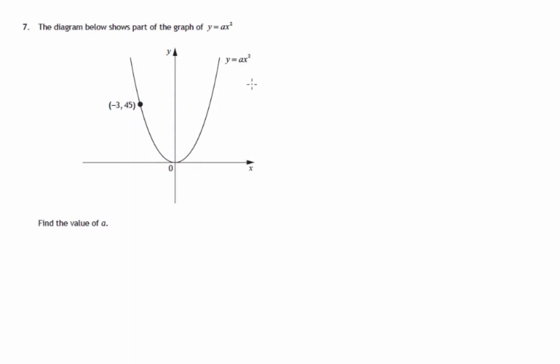y equals ax squared, and we're given a point, negative 3, 45, that lies on that graph. We don't know what a is, that's the question, we're trying to find the value of a.